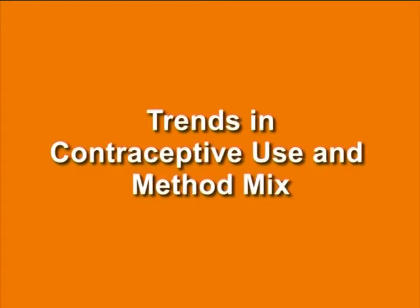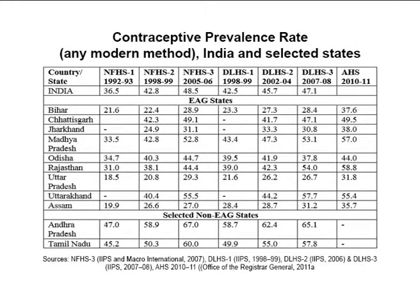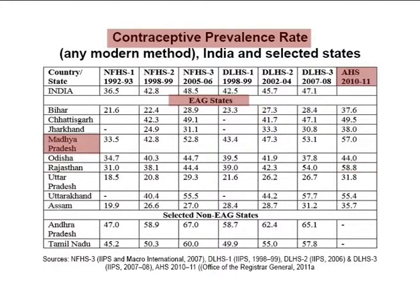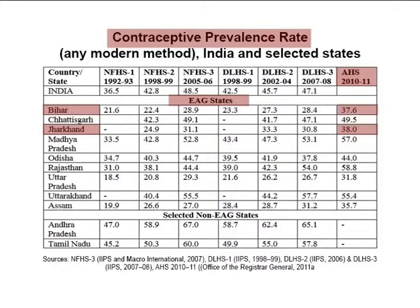Next is trends in contraceptive use and method mix. Table 4 on your screen shows that the latest AHS 2010–11 estimates of contraceptive use (CPR) for EAG states reveal that modern contraceptive use is highest in Rajasthan at 59%, followed by Madhya Pradesh at 57%, Uttarakhand at 55%, and Chhattisgarh at 50%, and lowest in UP at 32%. Contraceptive use in Bihar and Jharkhand was at a moderate 38% in 2010–11.